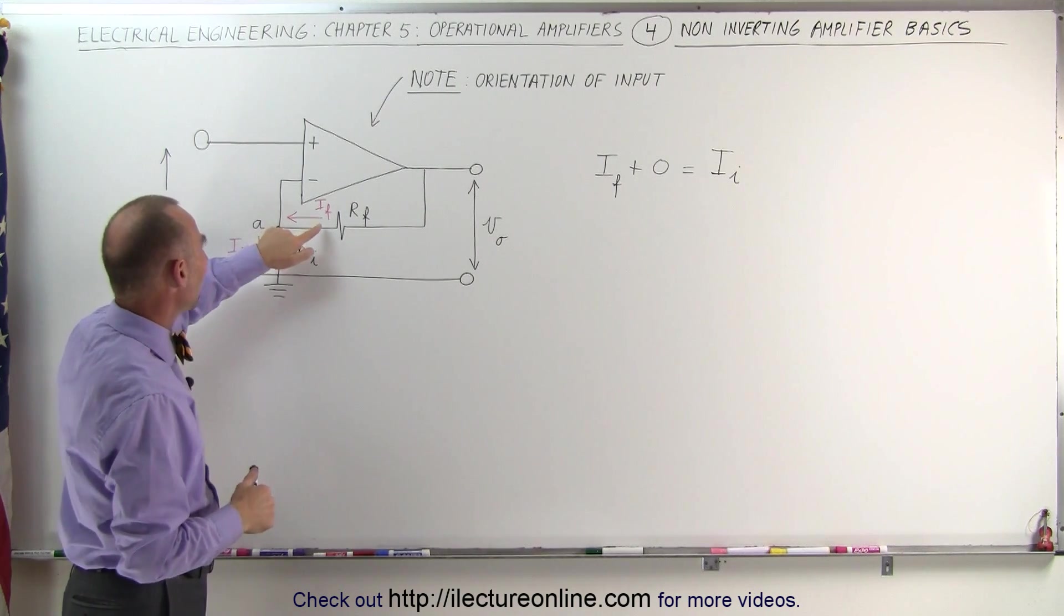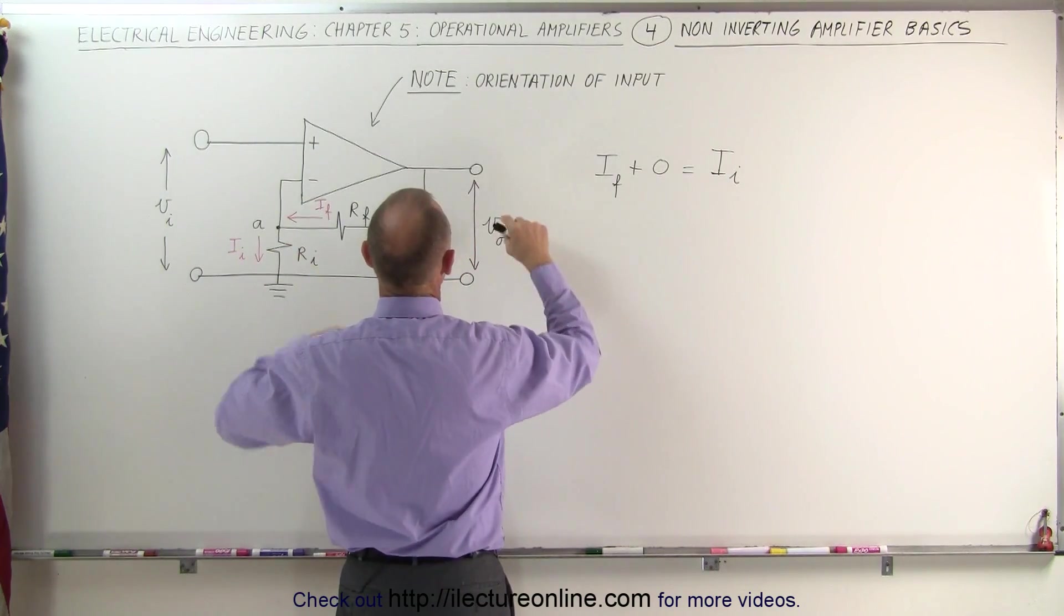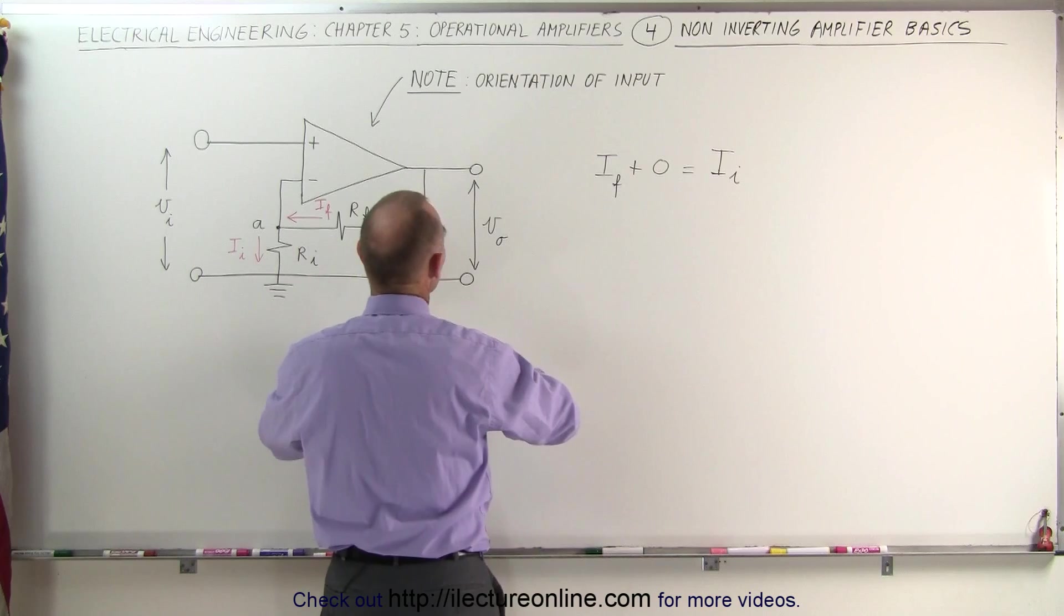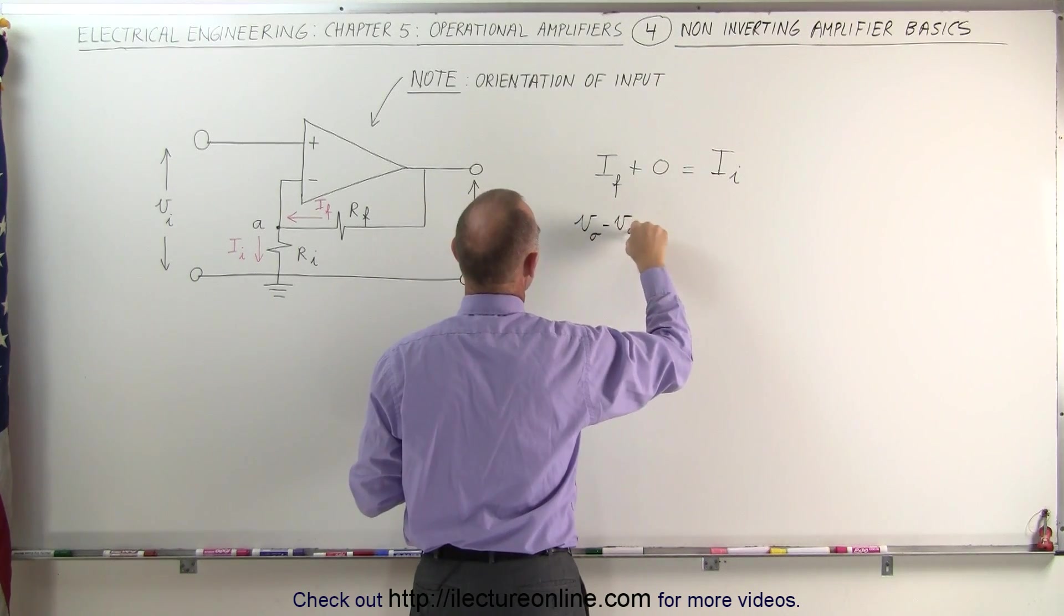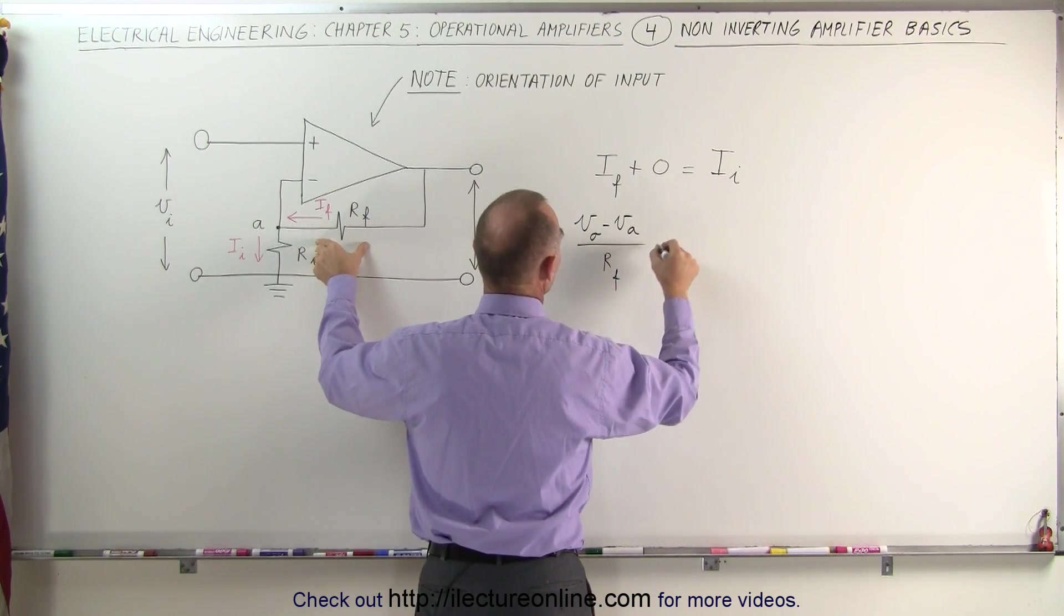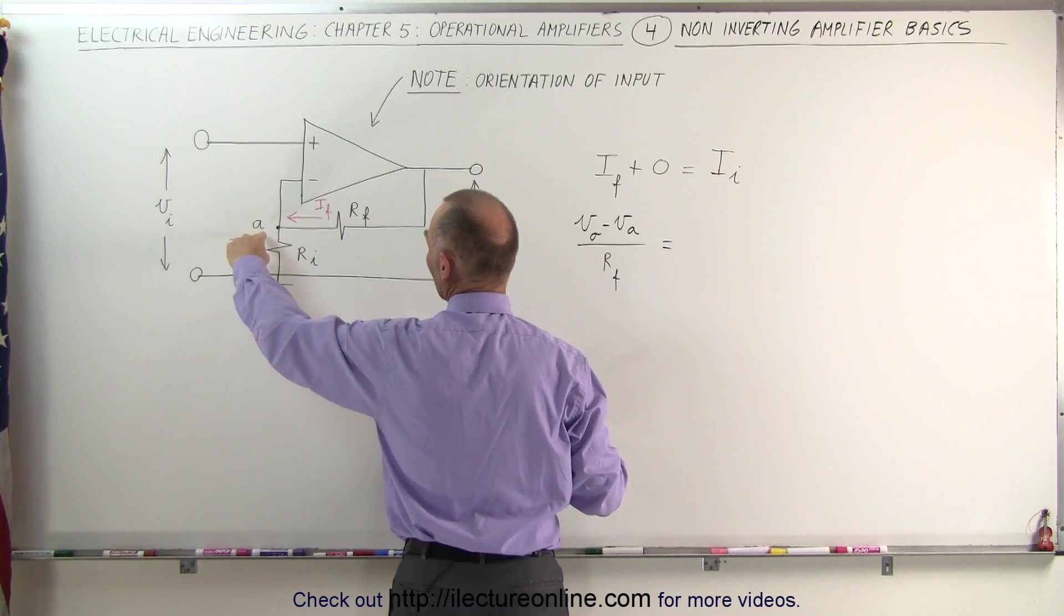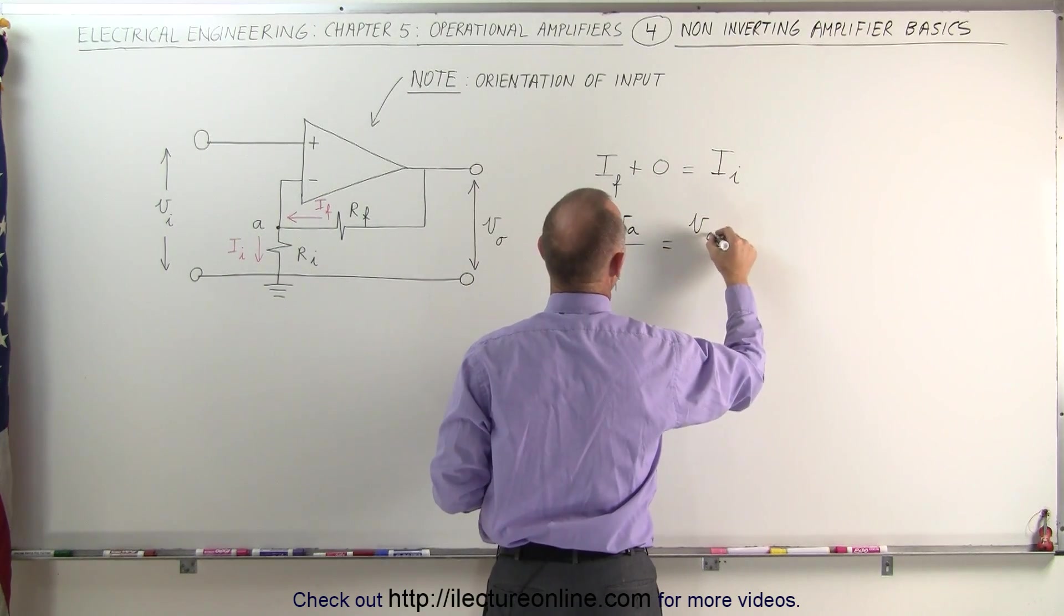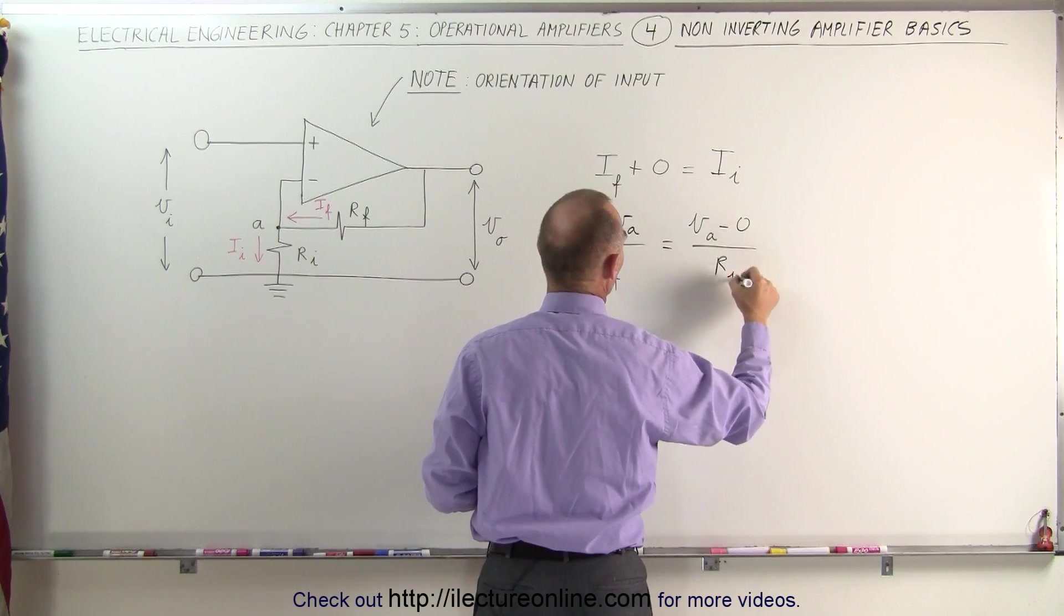Now the I sub F can be calculated by taking the difference by saying that would be V sub O minus V sub A. So V sub O minus V sub A divided by the resistance between them which is R sub F. That must equal the current over here which is the difference between V sub A and ground divided by the resistance there, R sub I.